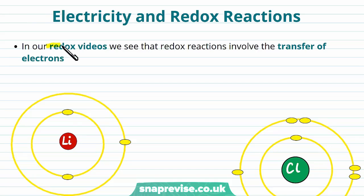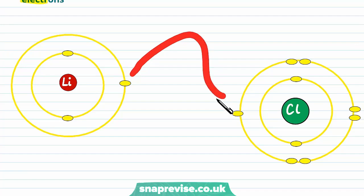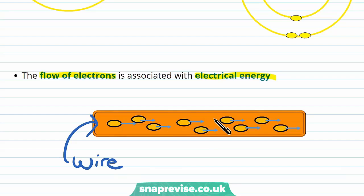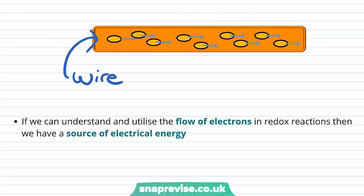From our videos on redox reactions, we know that redox reactions involve the transfer of electrons. So when a redox reaction happens, say between lithium and chlorine, the lithium will lose an electron — which we know is oxidation — and the chlorine will gain one, which we know is reduction. Another thing you may also know is that the flow of electrons is associated with electrical energy. So what if we could use a redox reaction, which involves the movement of electrons, as a source of electrical energy? If we can understand how the electrons flow, and from which elements to which other elements, then we could potentially have a source of electrical energy.